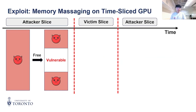For the exploit, we assumed the time-slice scenario in our threat model. An important requirement is that we need to place victim data in the vulnerable row. To do so, the attacker needs to massage GPU memory: first allocating the entire memory and then freeing holes in the vulnerable regions.